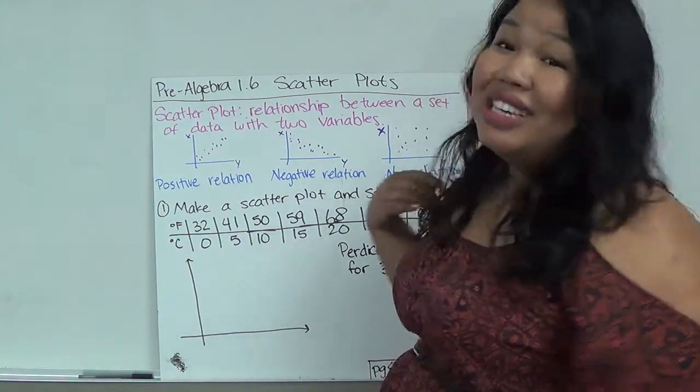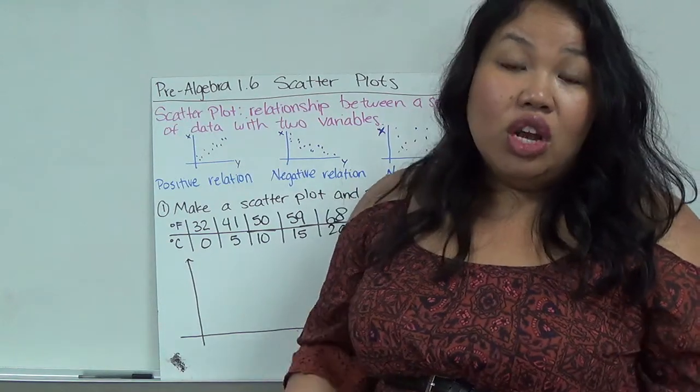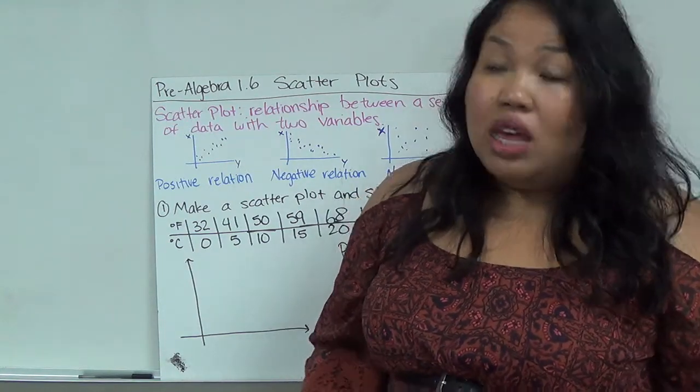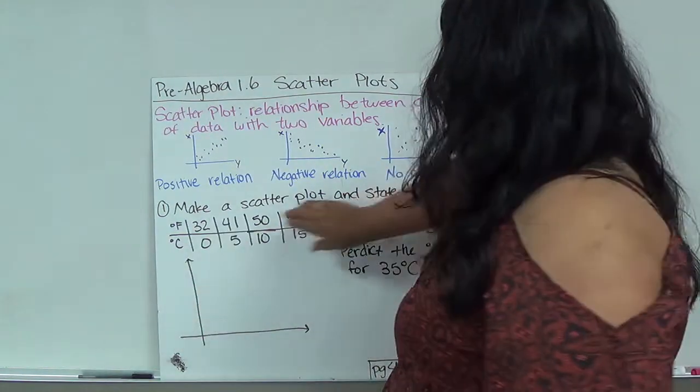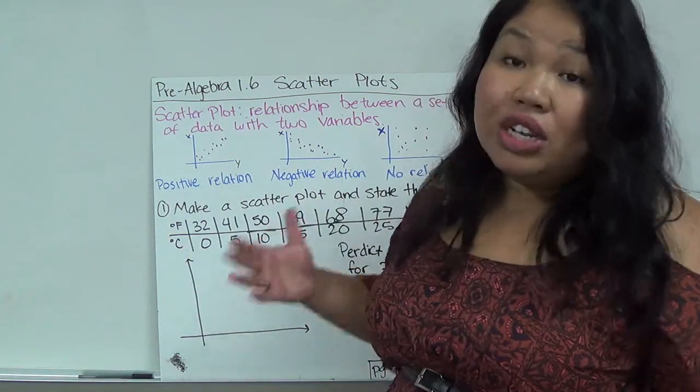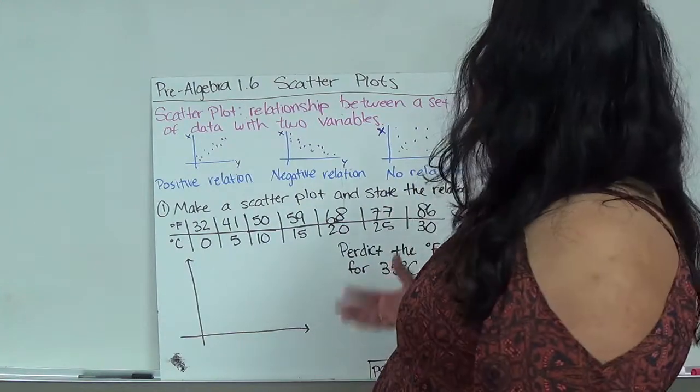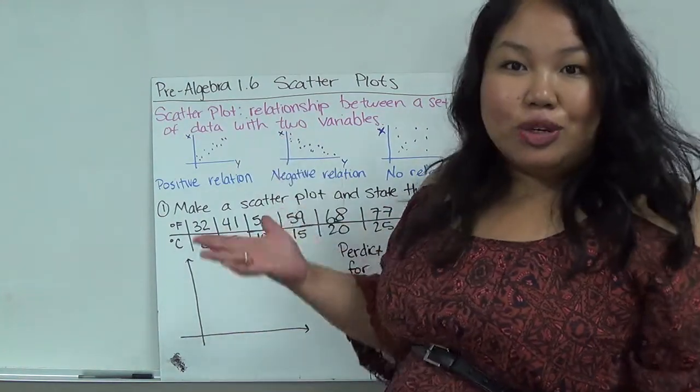Basically the scatter plot doesn't give us a nice line like other rules do. There's not an equation that they give us, they just give us a whole bunch of points so it doesn't necessarily fit a perfect line. It's going to be scattered, hence the term scatter plot.